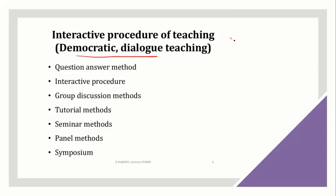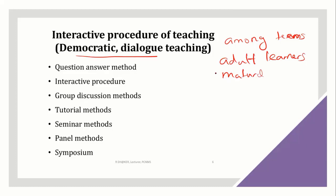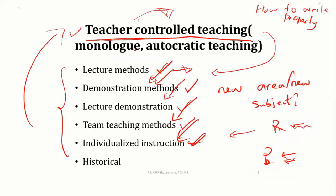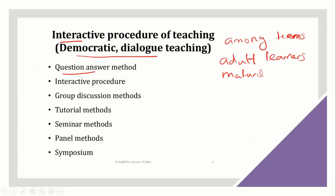Now, the interactive procedure of learning is especially useful among adult learners or matured learners. When we teach grown or adult people, the question-and-answer method may be the ideal way, because interaction is there — both the teacher and the learner are interactive. This type of teaching, like the lecture method, is the most common way in school environments, but in adult learning and higher education, the interactive approach is the best way.